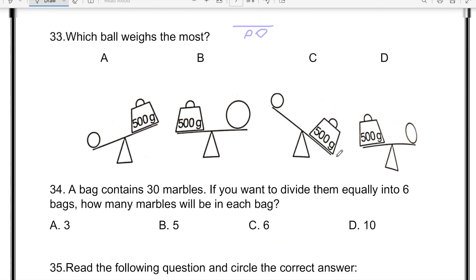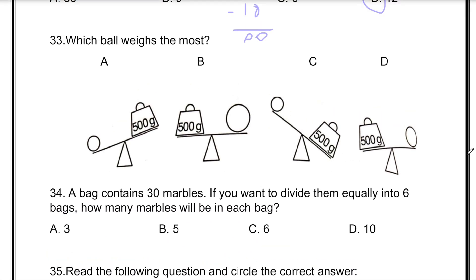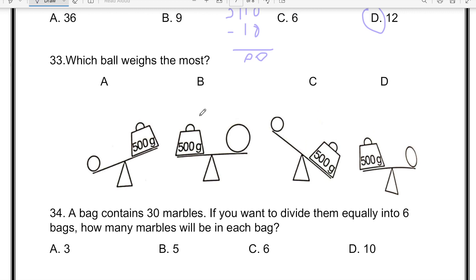Which ball weighs the most? So in option A, it looks like the ball here weighs more than 500 grams. Over here we can see that the line is a bit tilted, that means that the ball is a bit lighter weight than 500 grams.